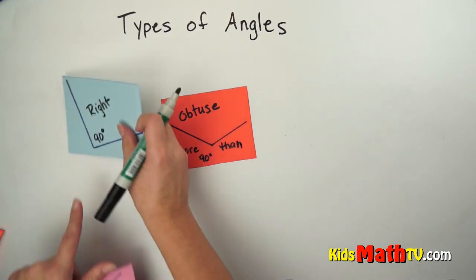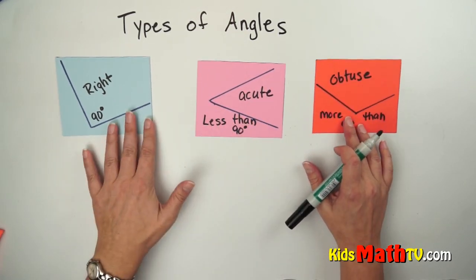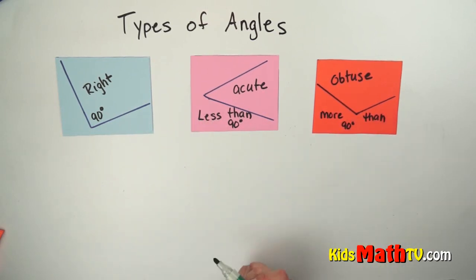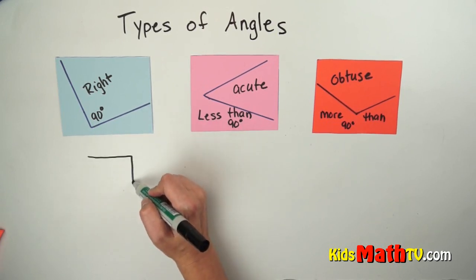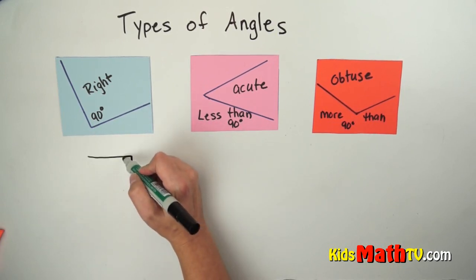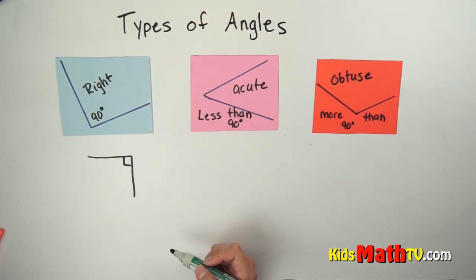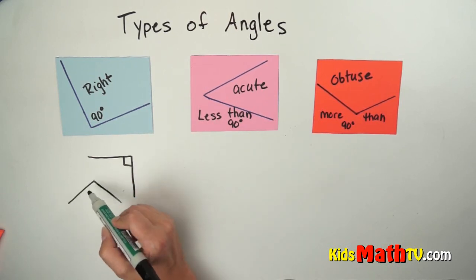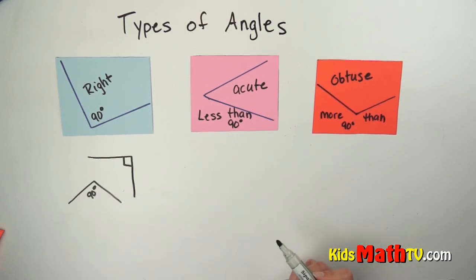So we have a right angle, an acute angle, and an obtuse angle. I can give you a few more examples. A right angle is always 90 degrees — it can be this way, and this box right here tells you that it is 90 degrees. It can be this way and I can label it 90 degrees like that.